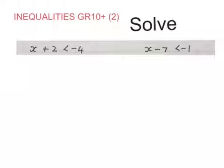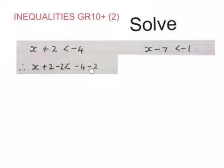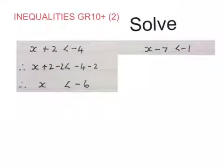You do it exactly as you would do an equation. You try and get the x alone by moving the stuff away from x. So you minus 2 on both sides. Your final answer is x is smaller than minus 6. Nothing happened to the inequality.